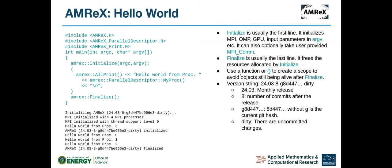MX has a function that can provide version information. The code doesn't call the version function directly, but MX Initialize prints out the version string. This is useful so you know which version of MX you're using — for example, a monthly release — and the number after is the count of commits after the release.